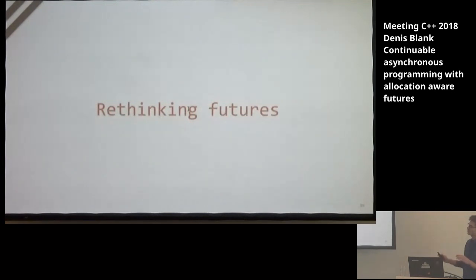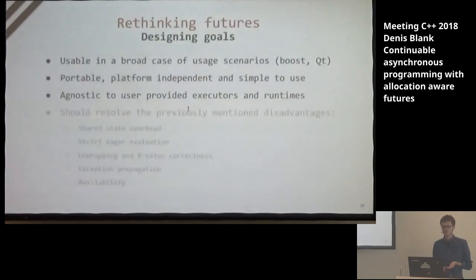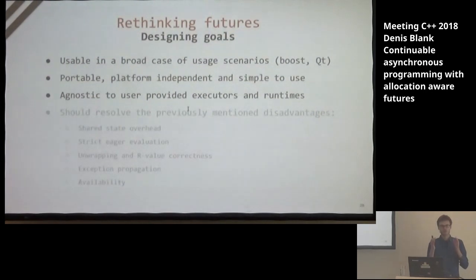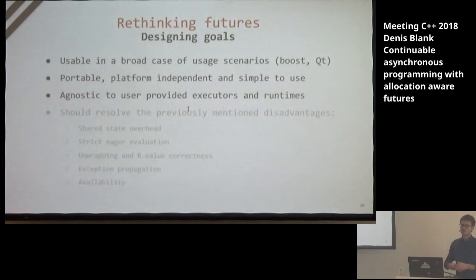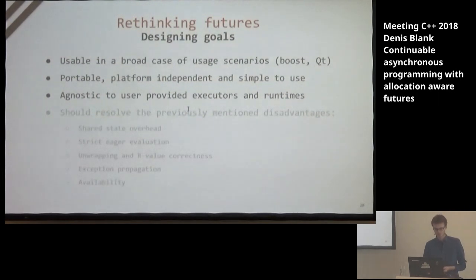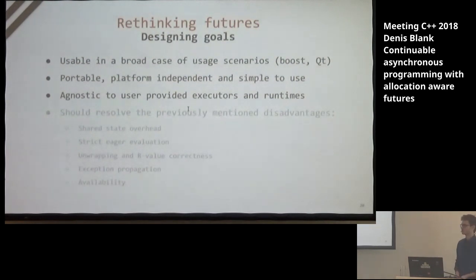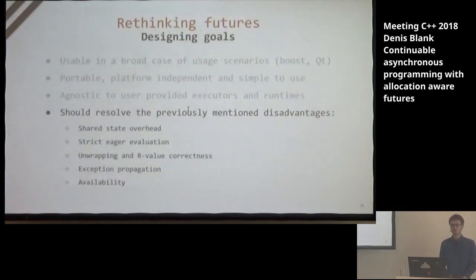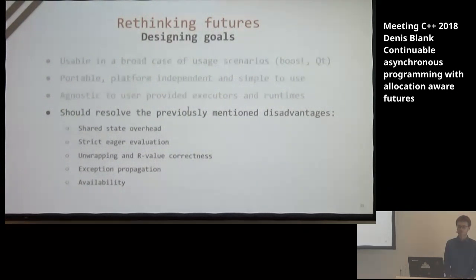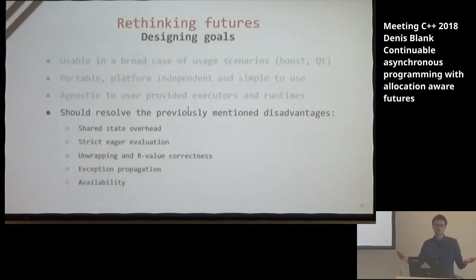It should resolve the previously mentioned disadvantages: shared state overhead, strict eager evaluation, unwrapping and R-value correctness, exception propagation, and availability. It should be available now, because we need it now. Why aren't we just using callbacks to express how an asynchronous operation ended? The obvious answer is that it's really complicated to express complex asynchronous continuation chains through callbacks — there's the principle of callback hell, where callbacks are nested into each other, producing an immense amount of unreadable code. But callbacks are simple and performant, and work nicely with existing libraries.